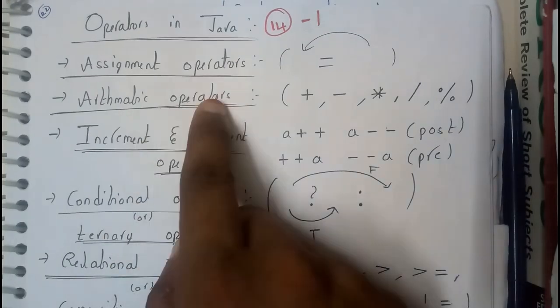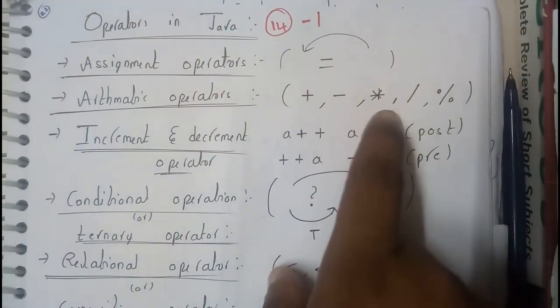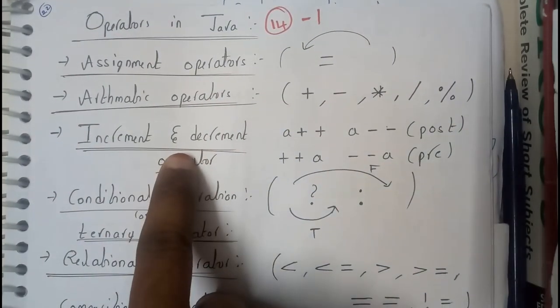Arithmetic operators is nothing but addition, subtraction, multiplication, division, and modulo. Increment and decrement operators are nothing but a plus plus, a minus minus, which are nothing but post, and plus plus a and minus minus a, pre.